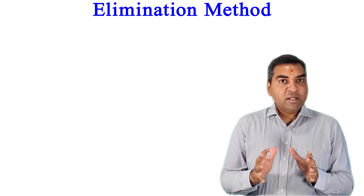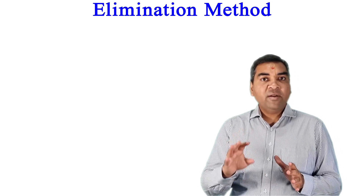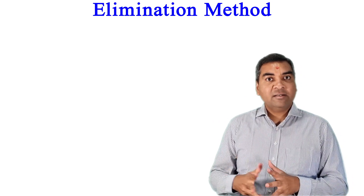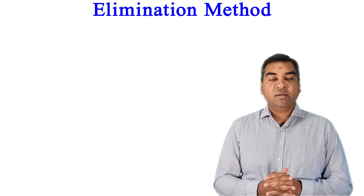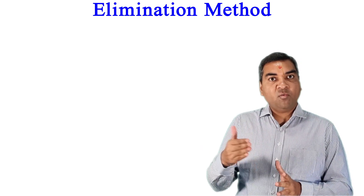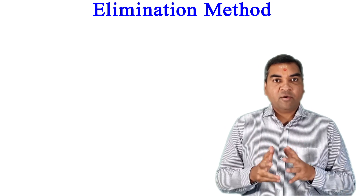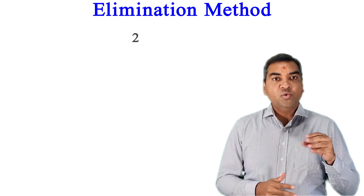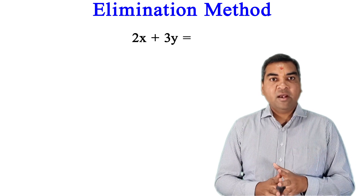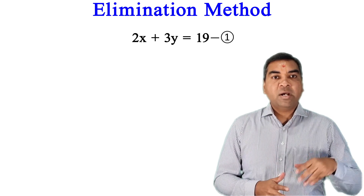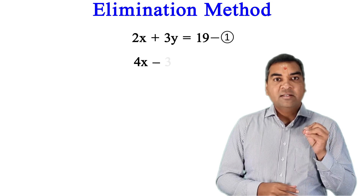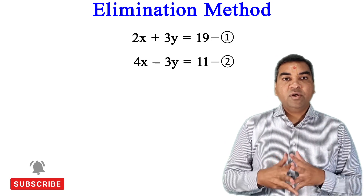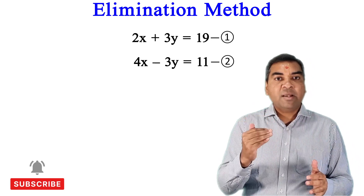Elimination method can have four different kinds of questions. If you know how to solve each of these four kinds, you can solve any question based on elimination method. I'll teach you all four question types one by one. Let's start with the first kind. My first equation is 2x + 3y = 19, and my second equation is 4x - 3y = 11.